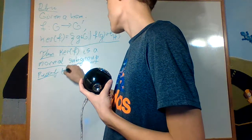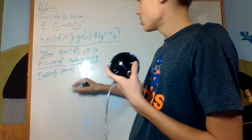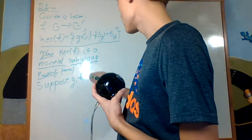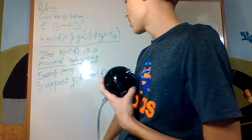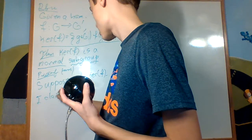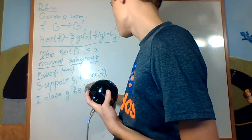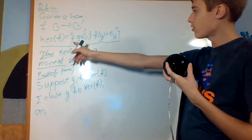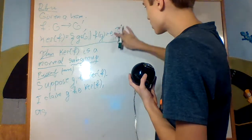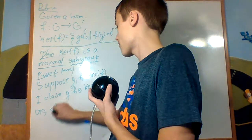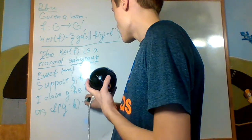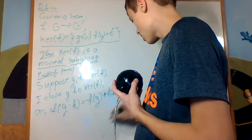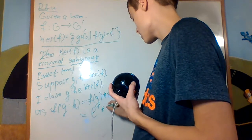Let's prove that it's a subgroup. Suppose G and H are elements of the kernel of F. I claim G times H is an element of the kernel of F. We need to check that F of G times H is equal to the identity in G prime, E prime. F of G times H equals F of G star F of H, which is E prime star E prime, which is E prime.